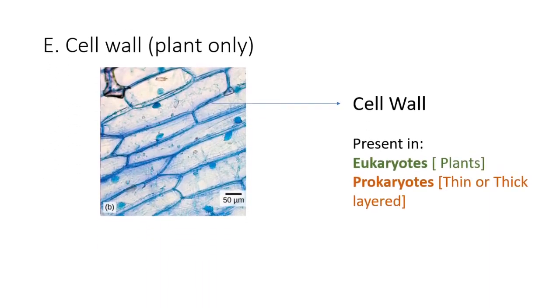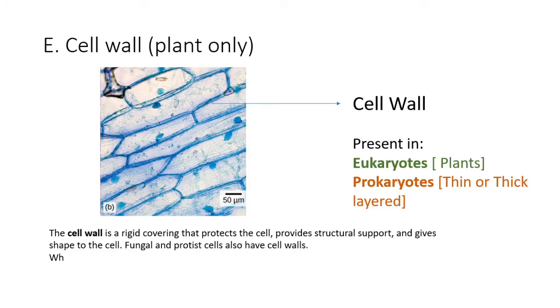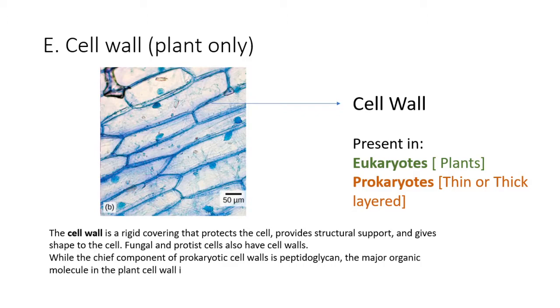The cell wall is a rigid covering that protects the cell, provides structural support, and gives shape to the cell. Fungal and protist cells also have cell walls. While the chief component of prokaryotic cell walls is peptidoglycan, the major organic molecule in the plant cell wall is cellulose, a polysaccharide made up of long, straight chains of glucose units.